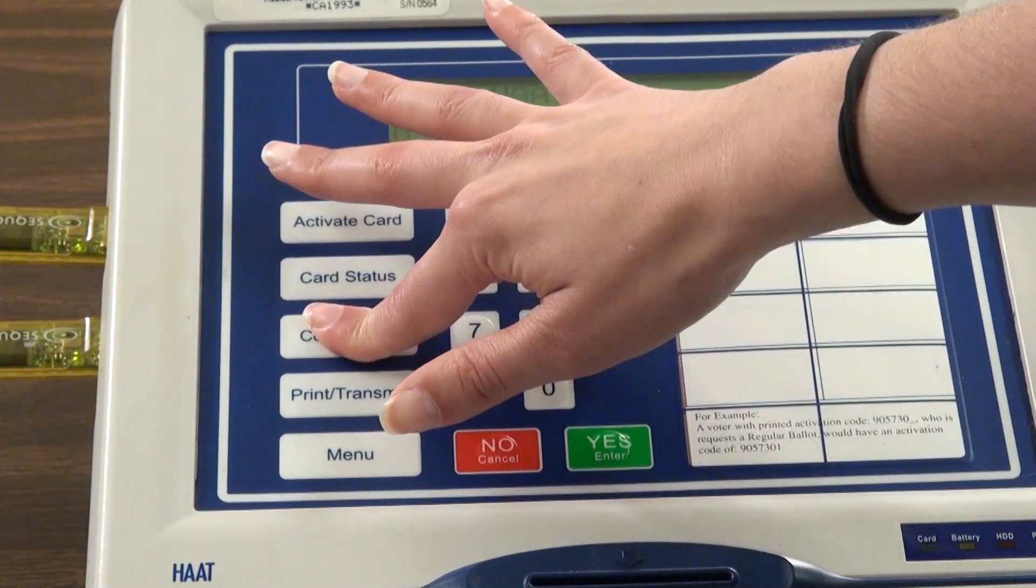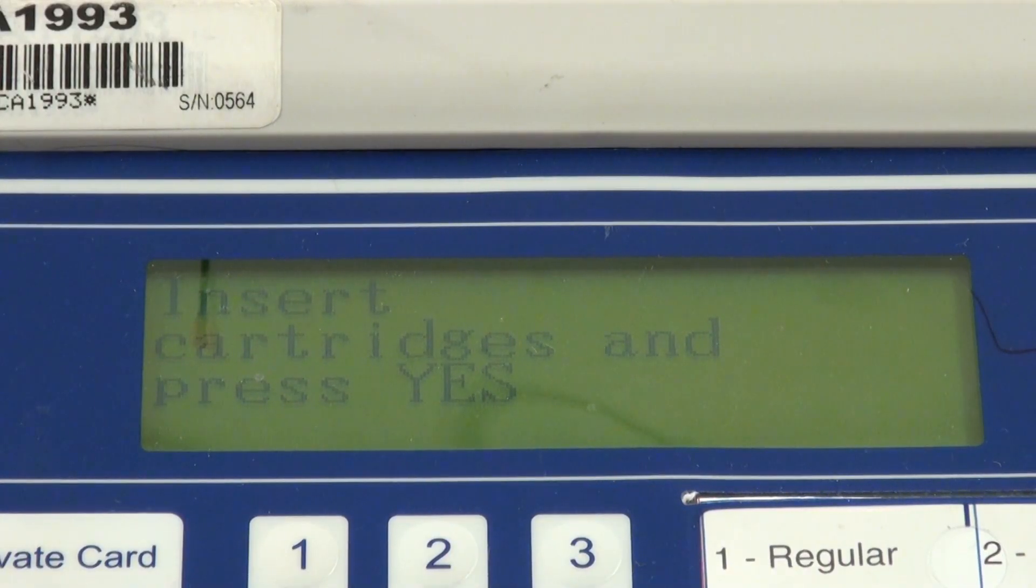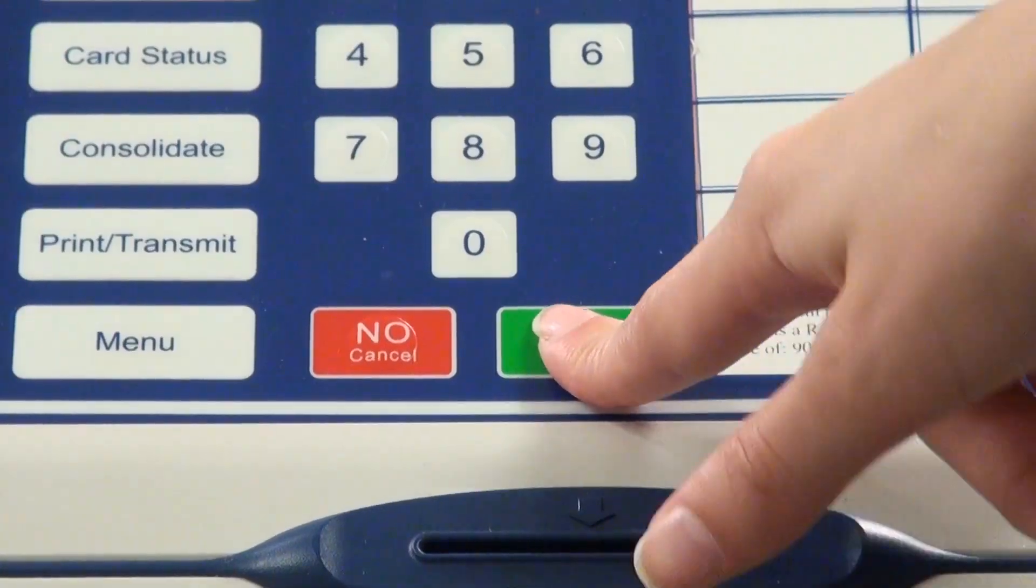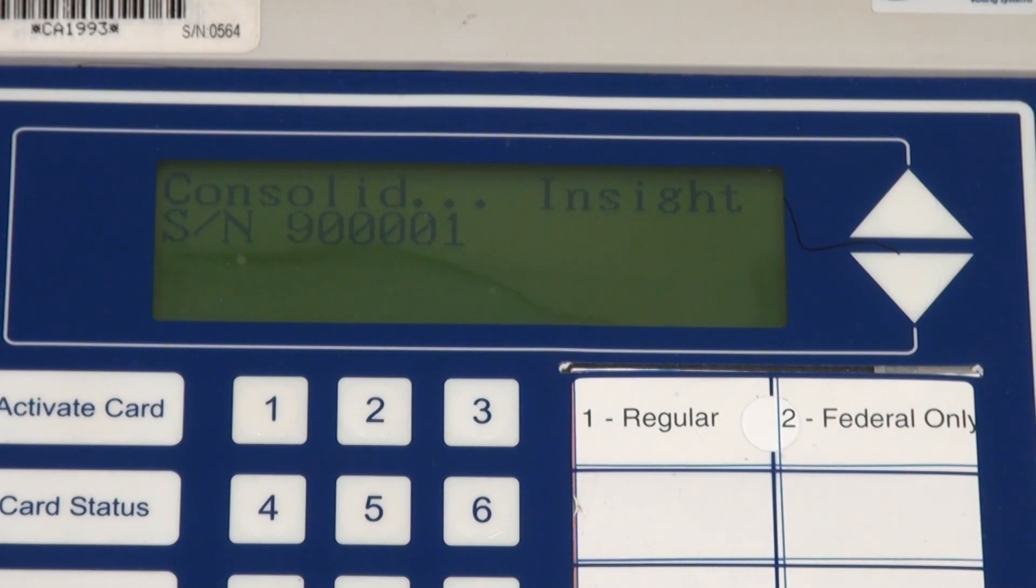Press the consolidate button on the card activator. The machine will ask you to insert cartridge. Verify that the cartridges and memory pack are inserted correctly. Then press yes. Wait until the card activator is finished reading the results cartridges and memory pack.